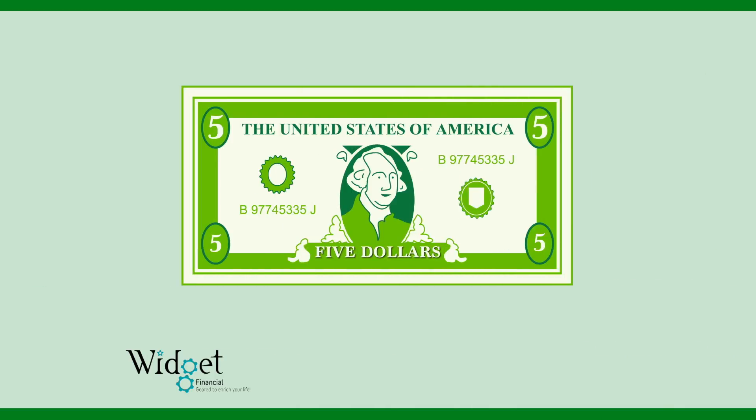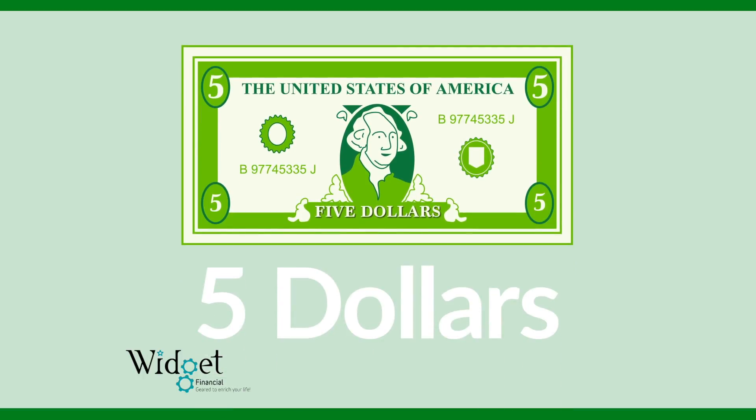A five dollar bill looks like this. It has a five in each of its corners. That means it's worth five dollars.